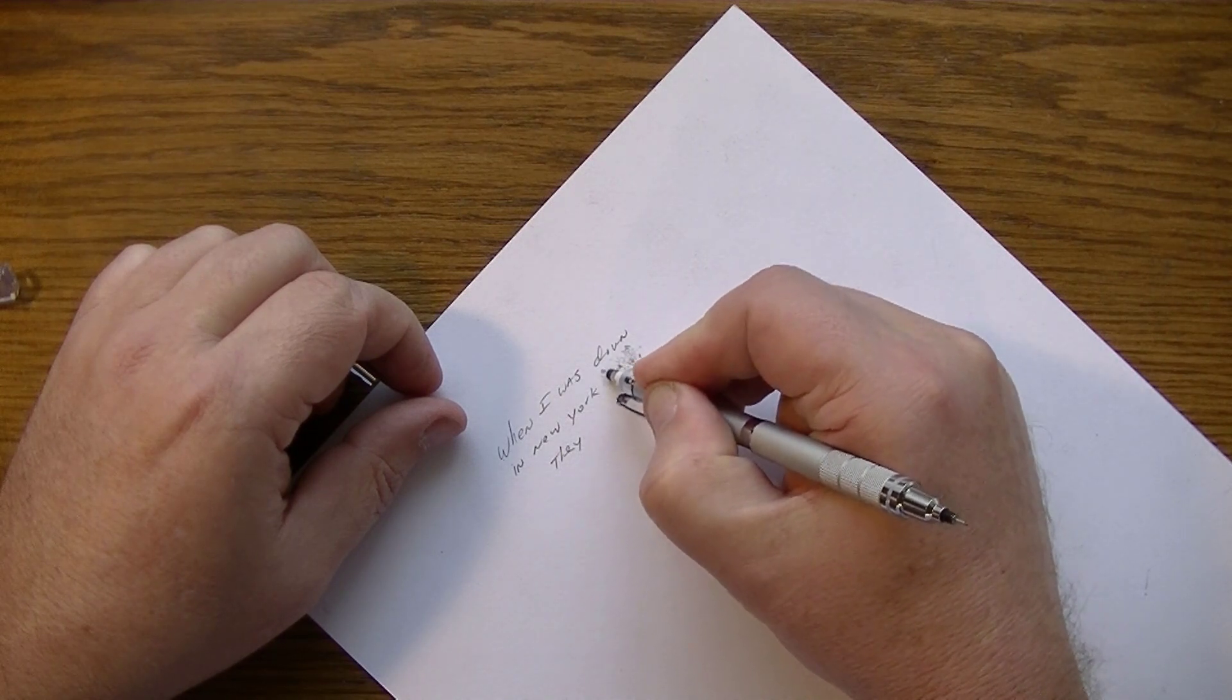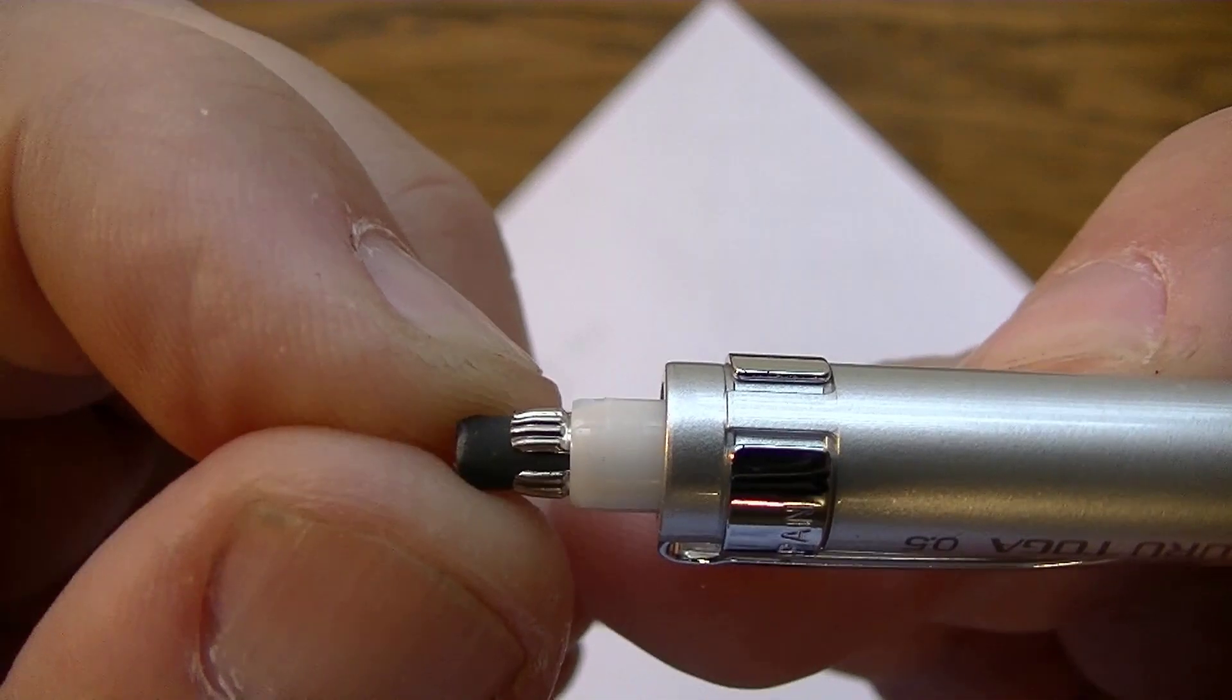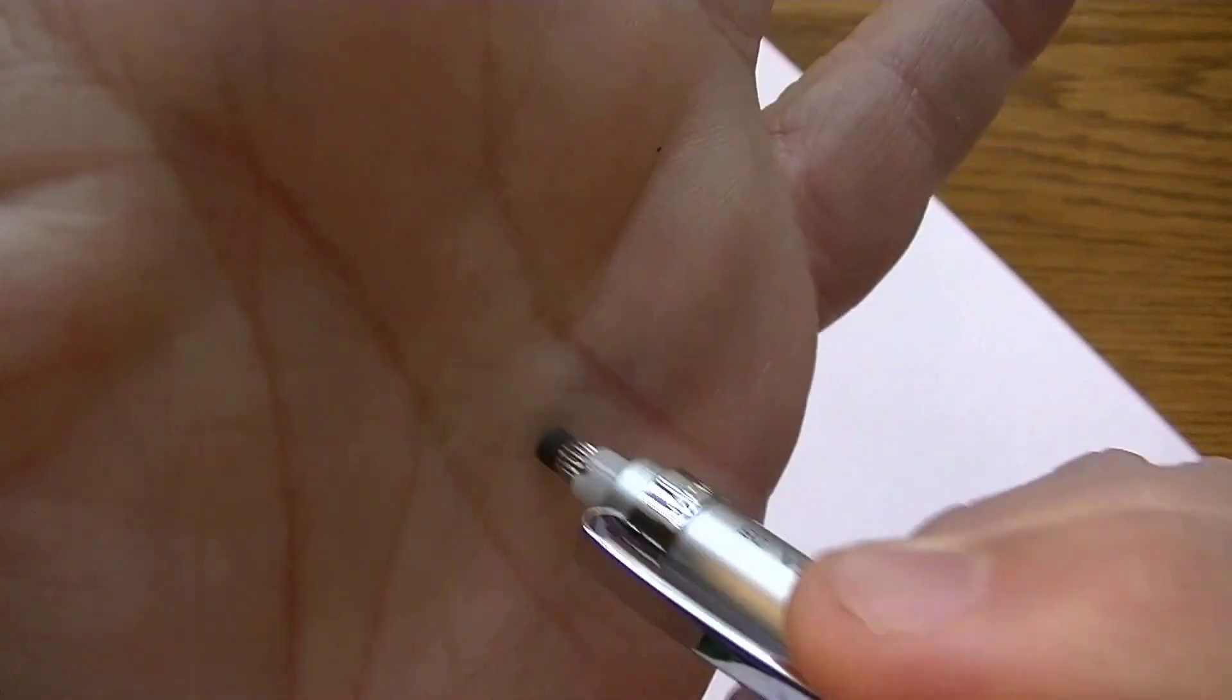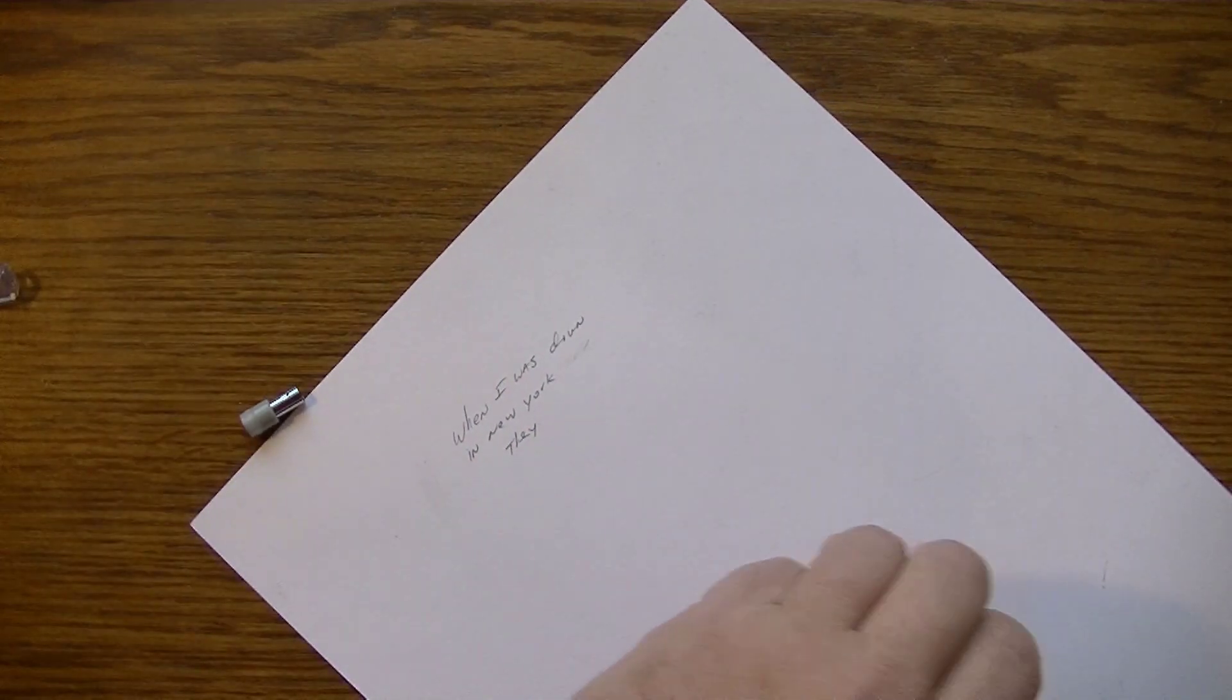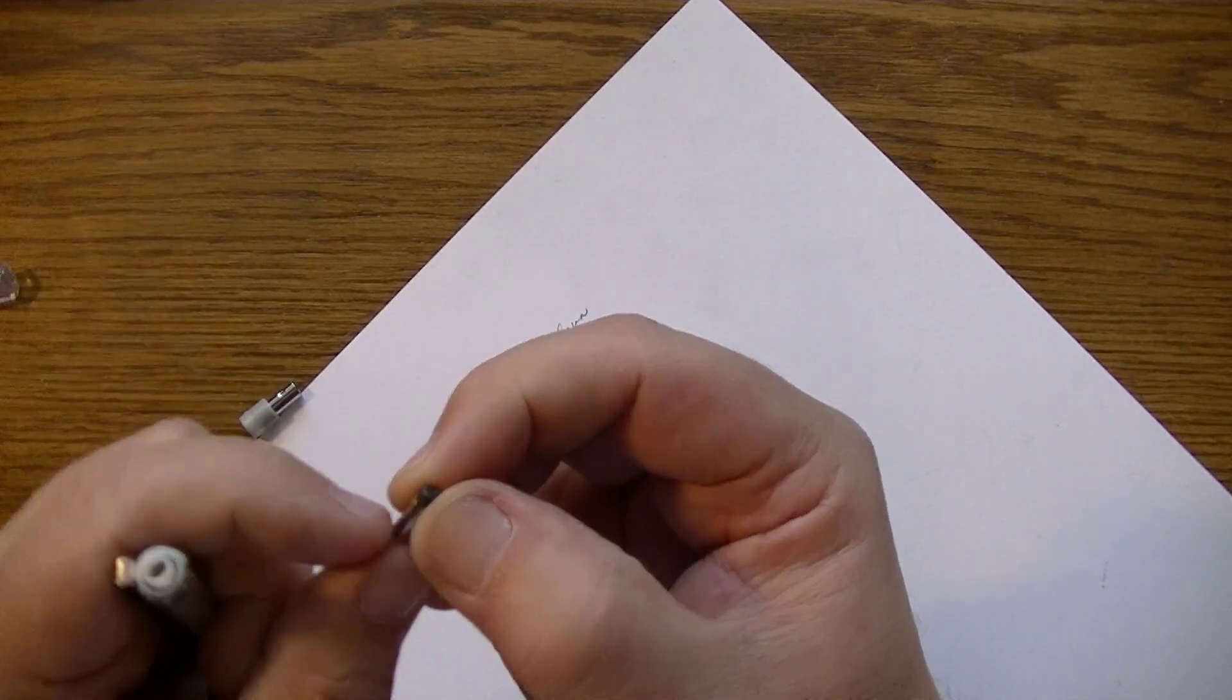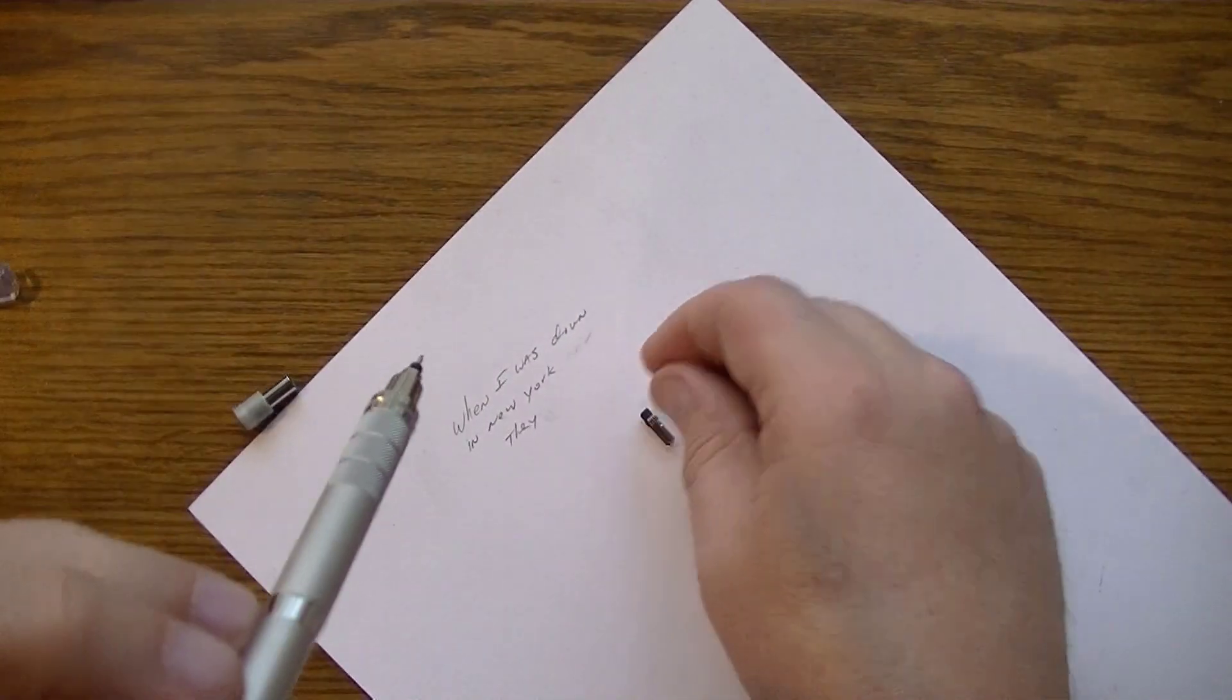Now the eraser works good though what I do notice is that you have a little play. You can see the little play there so as you're erasing you have this wobbly feel to it, kind of wobbly as you're erasing. You may or may not like that. Oh okay, well that comes out and looks like the eraser is adjustable. You can adjust it and I imagine you can replace it.